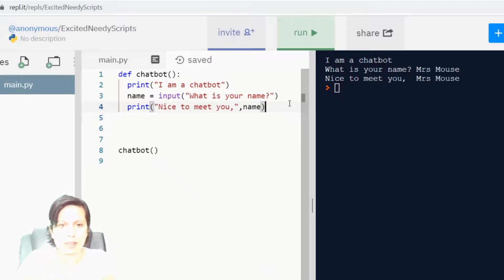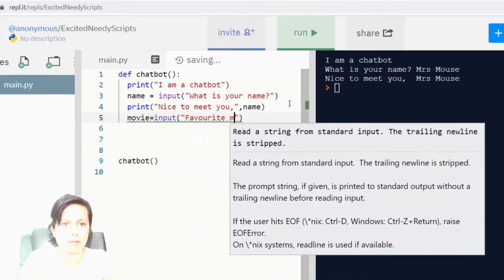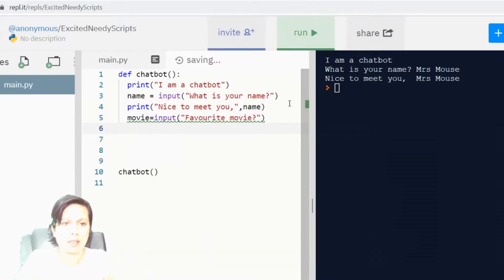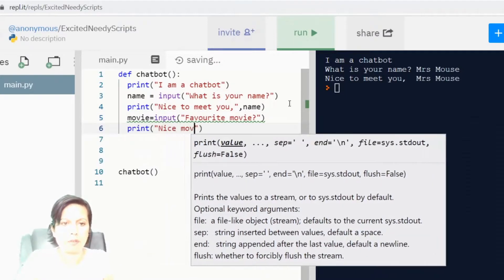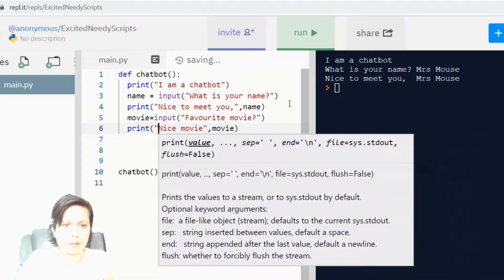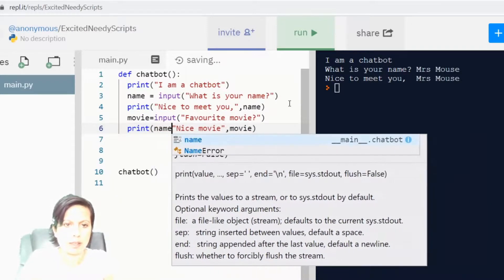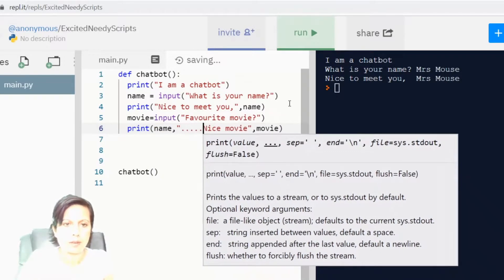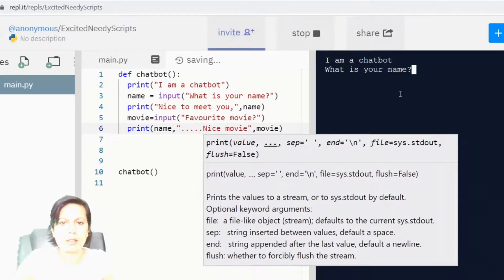You could extend this program. You could write, movie. Favorite movie. And then I could write, nice movie. And I could even make this slightly more interesting. I could add the name at the front. So, I could say, name.